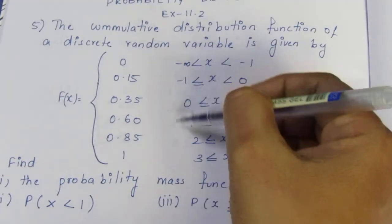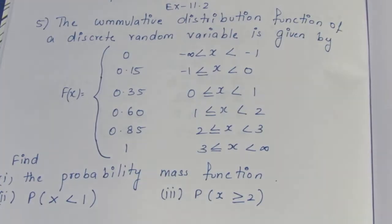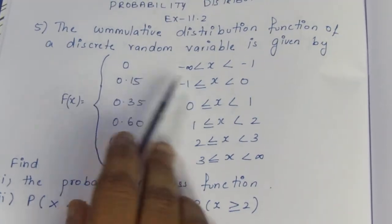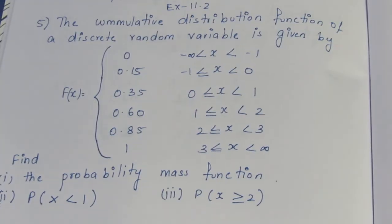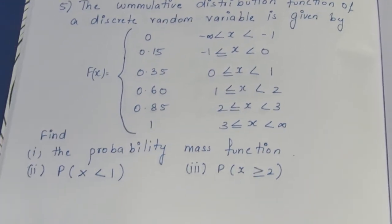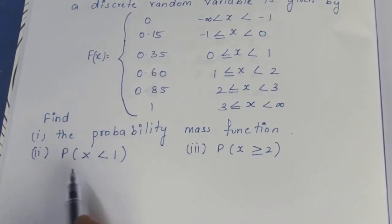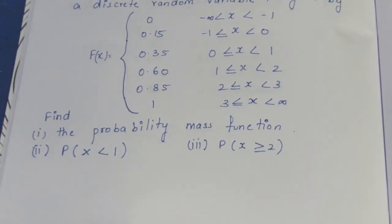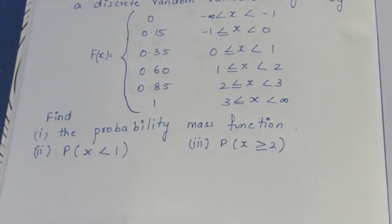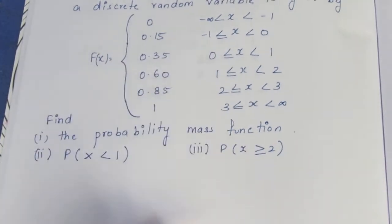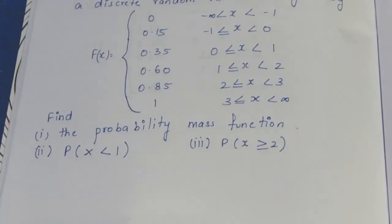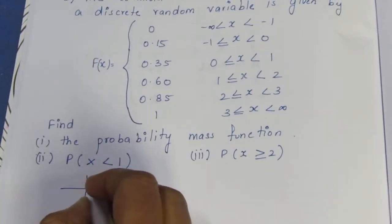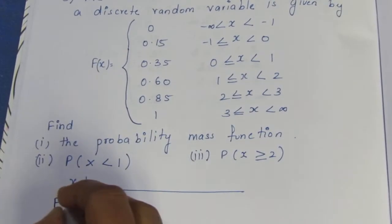If you look at this, it uses equal to and not equal to conditions. We will find and give 3 subdivisions. The probability mass function — find p of x less than 1, p of x greater than or equal to 2. The probability mass function means small f of x, where capital F of x is equal to the sum up to x. We can see how small f of x is derived from capital F of x.